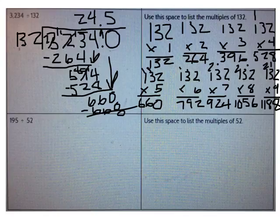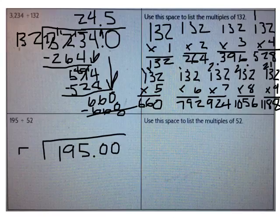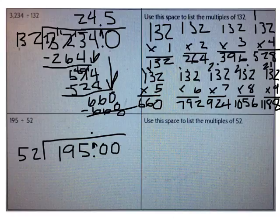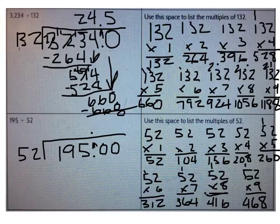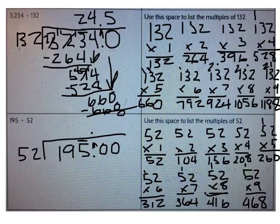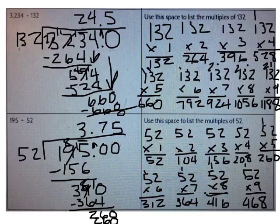Now let's try another problem: 195 divided by 52. Go ahead and write 195 and 0 hundredths divided by 52. Bring your decimal point straight up. Now take some time to list the multiples of 52. Write them on your paper and enter them on the computer. Check your multiples with mine. Where are we going to start dividing in this problem? We're going to start in the ones place. Go ahead and solve this problem now. The correct answer is 3 and 75 hundredths. Check your work with mine.